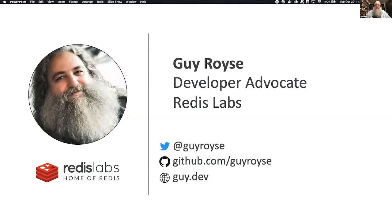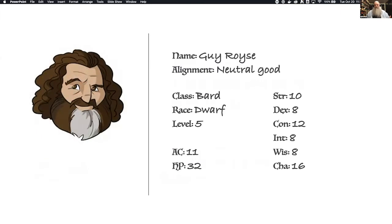I'm a developer advocate at Redis Labs. I've been a developer for a couple of decades and I've been playing DnD for probably a decade more than that. This is a talk about Dungeons and Dragons and graph databases, so I thought the standard developer outfit and social information wasn't enough — I'd share my character sheet. I'm a dwarf bard, level five, technically multi-class since I've been programming longer than I've been a developer advocate.